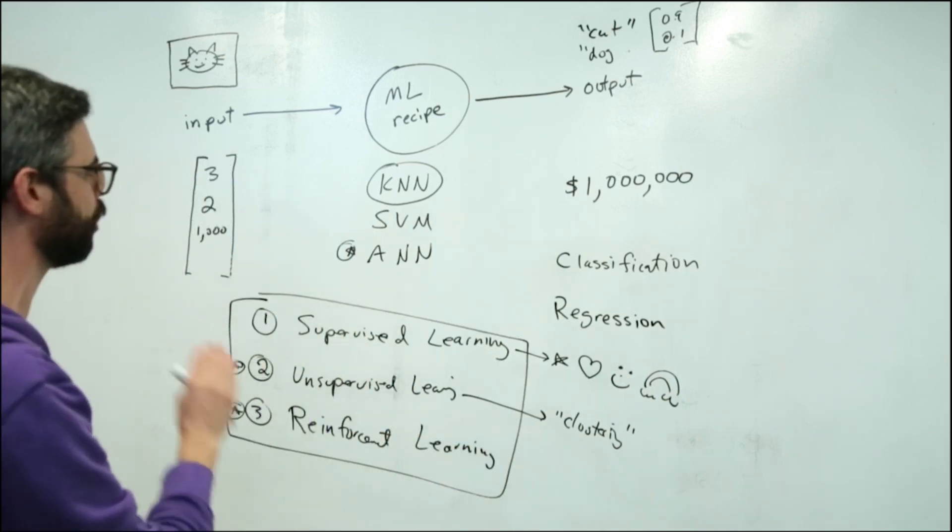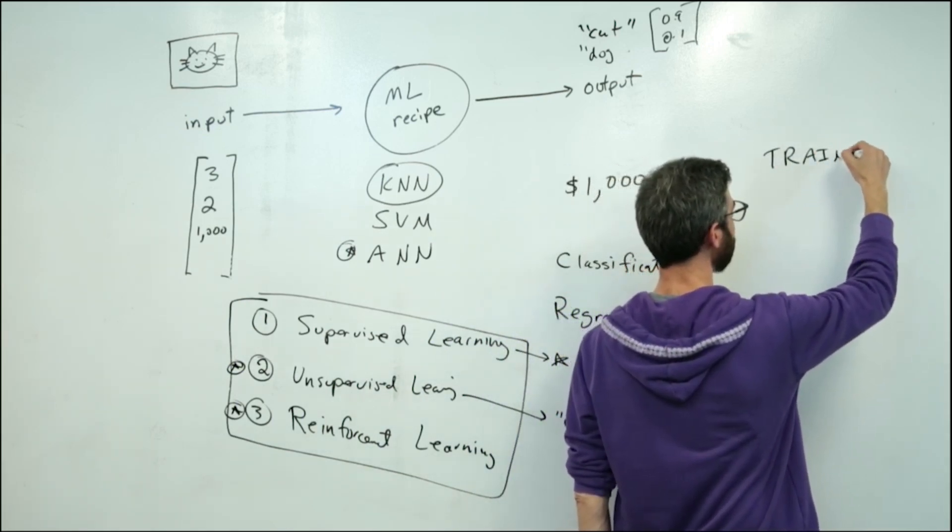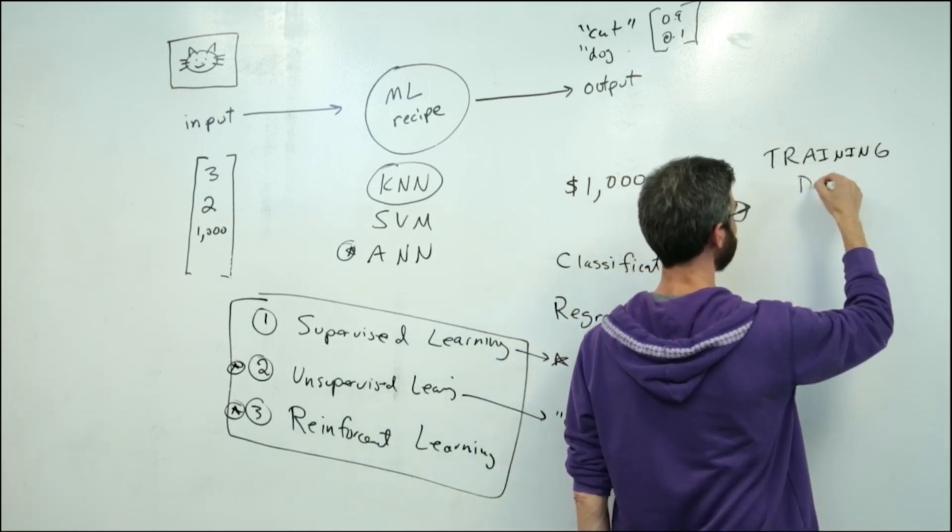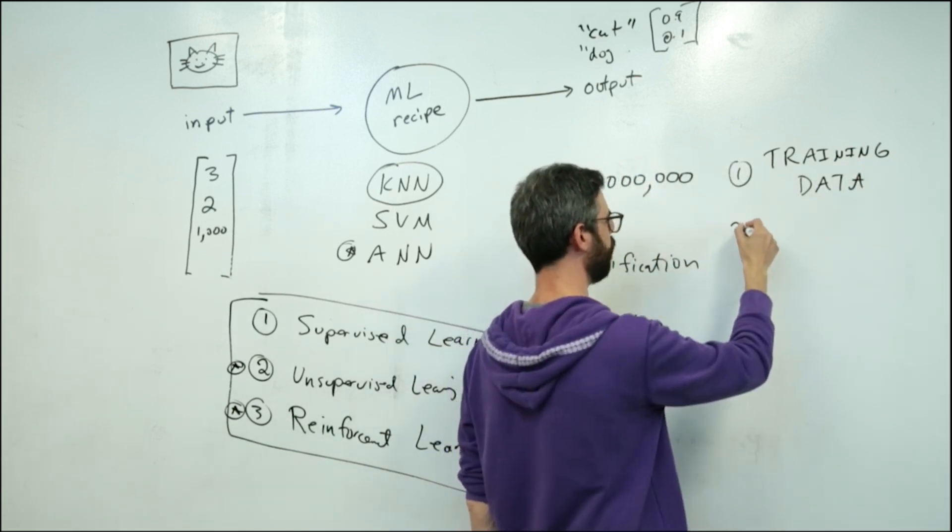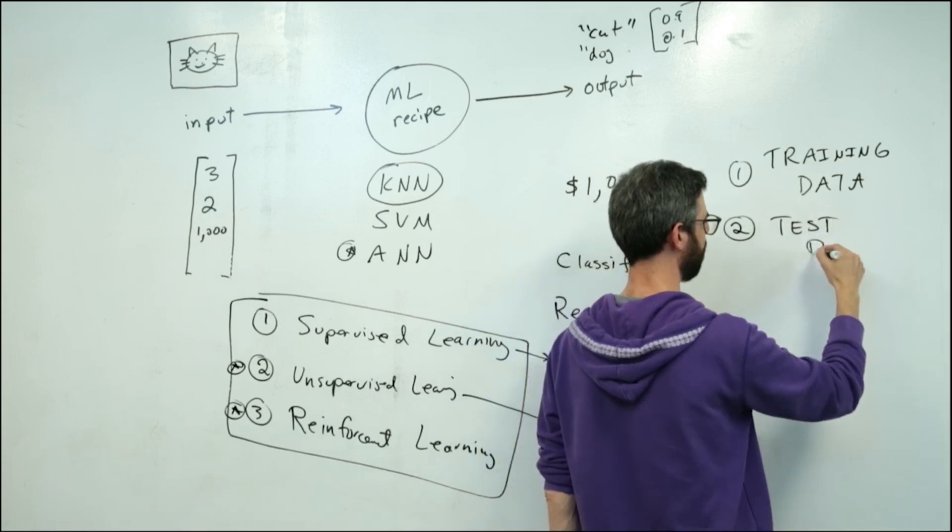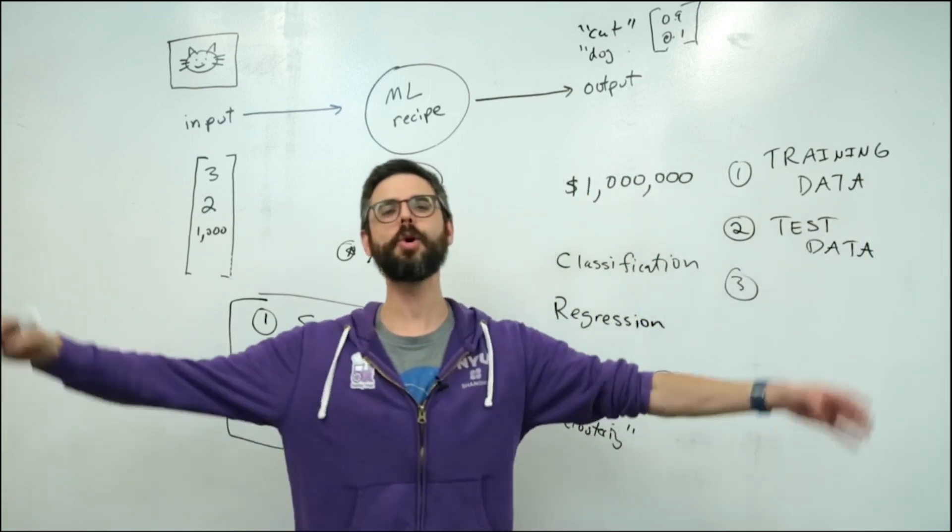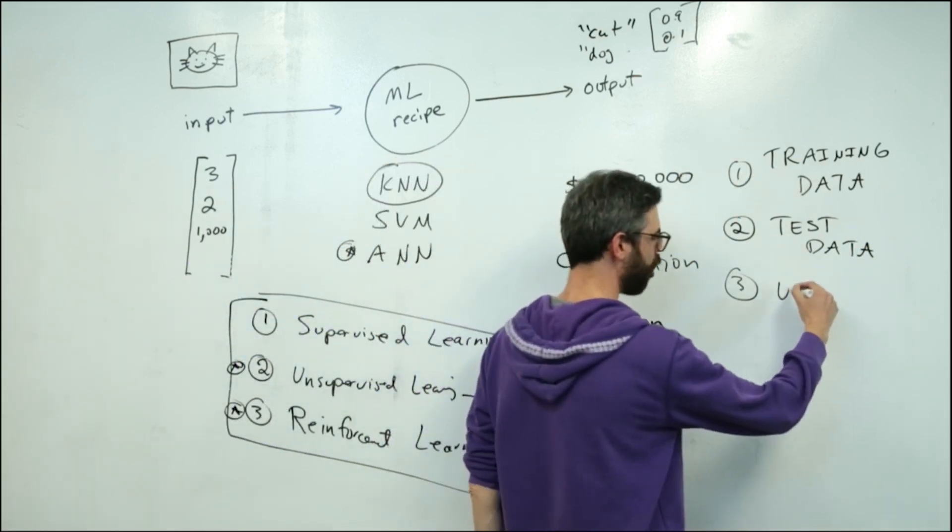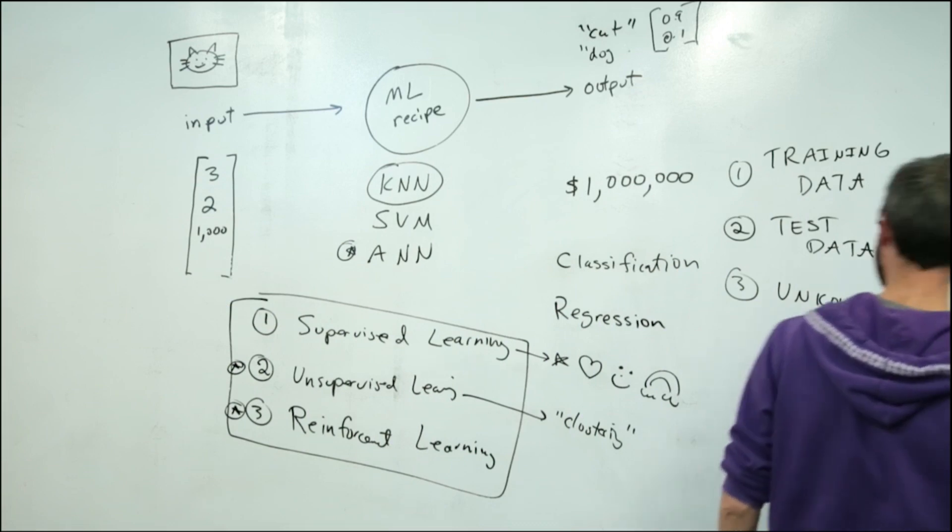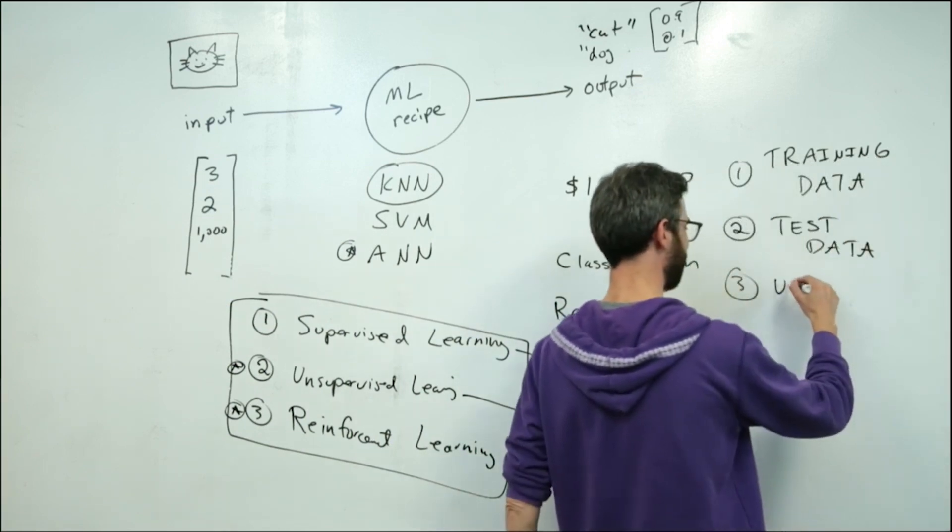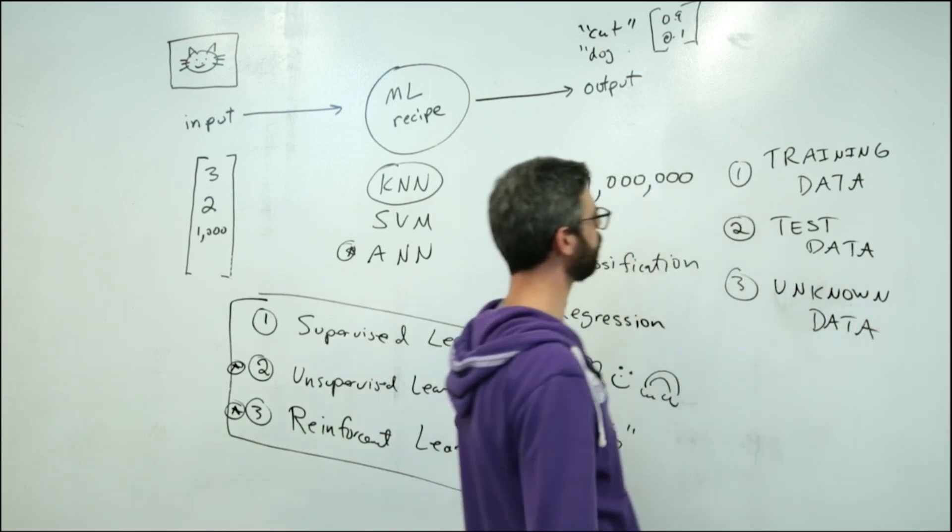The idea of supervised learning is I have training data. So number one, I have training data. Number two, I have test data. And number three, I have the rest of the world, universe of data. So maybe we could call this unknown data.